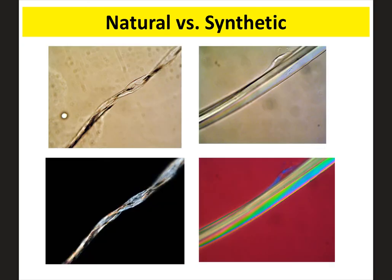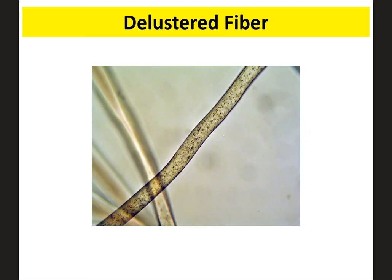Here are more microscopic views showing natural fibers on the left and synthetic fibers on the right. The natural fibers are not as perfectly organized as the synthetic ones. A delustered fiber shows a speckled appearance because a delustrant has been added to reduce its shininess.